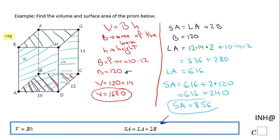So the volume is 1680 cubic units and the surface area is 856 square units. If you enjoyed this little clip, don't forget to click the like button and come back on C squared for more help. Thank you.